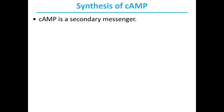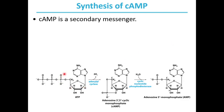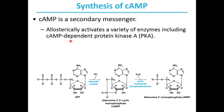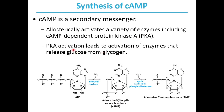Cyclic adenosine monophosphate (cAMP) is a secondary messenger. Adenylyl cyclase cleaves a pyrophosphate bond from ATP and cyclizes adenosine monophosphate to form cAMP. cAMP phosphodiesterase hydrolyzes cAMP back to adenosine monophosphate, terminating the signal. The function of cAMP is to allosterically activate a variety of enzymes, including cAMP-dependent protein kinase A (PKA). PKA activation leads to activation of enzymes that release glucose from glycogen, which is a very important cellular process.